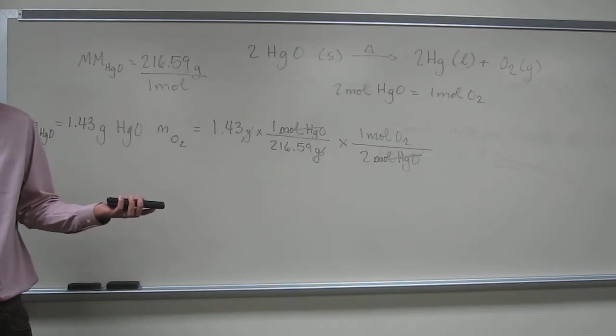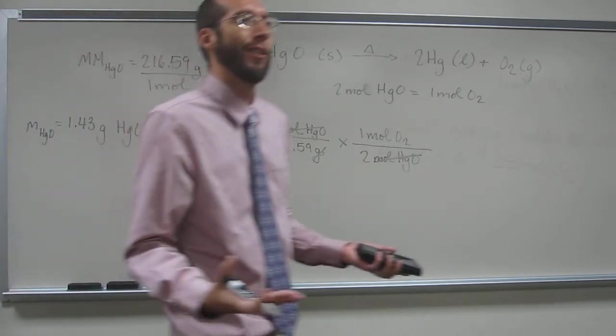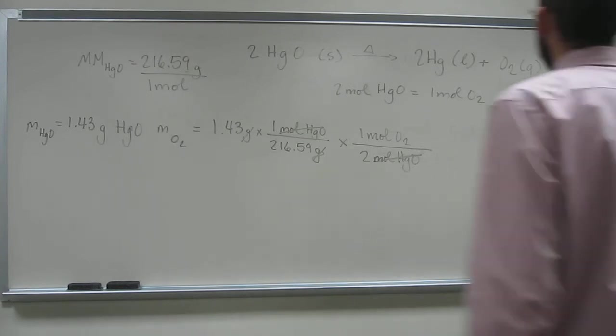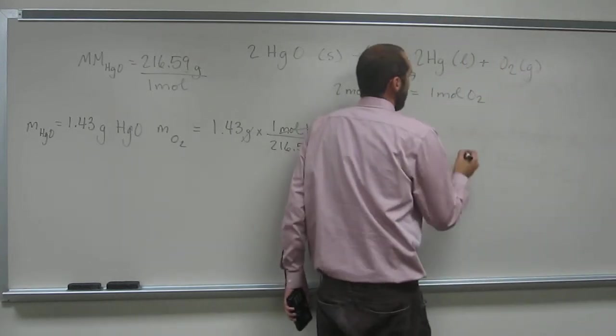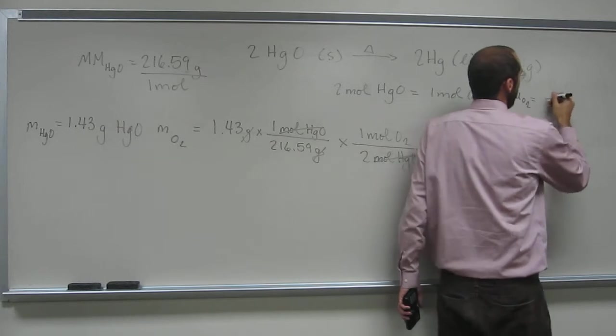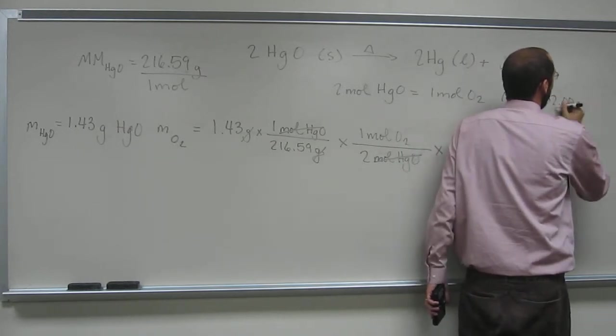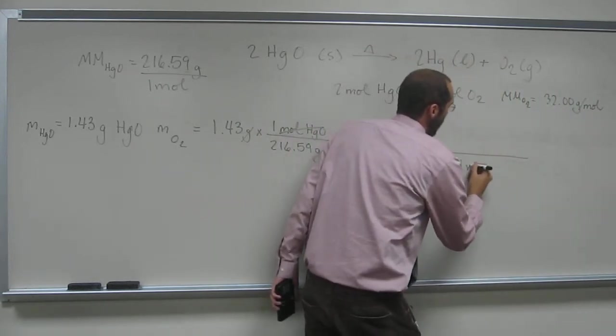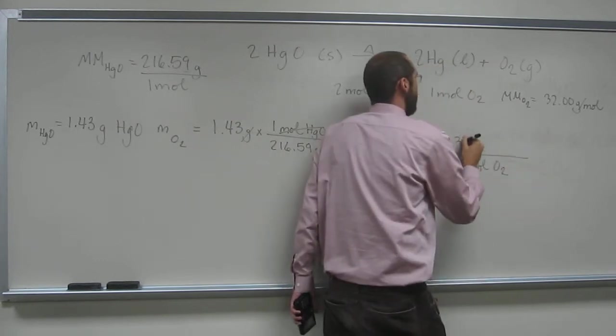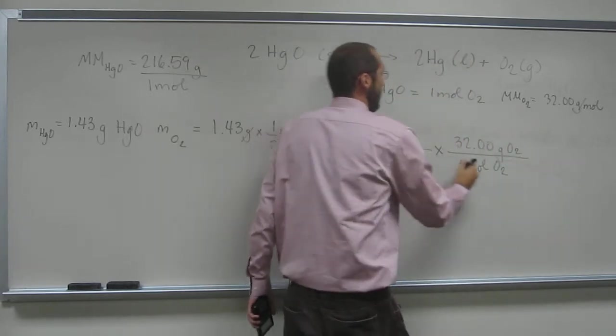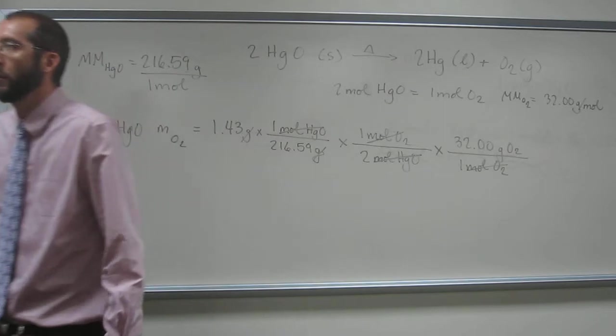It's called the molar mass. So it's going to be 16 times 2, so it's going to be 32.00 grams per mole. So we've got 1 mole O2 equals 32.00 grams of O2. Cancel, cancel. And is that what we were looking for? The mass of O2?